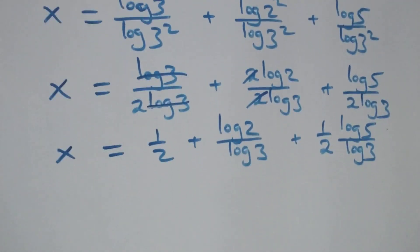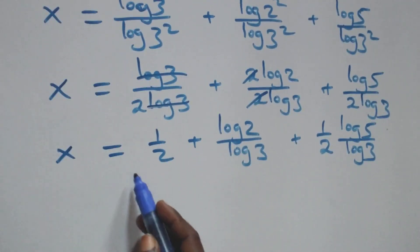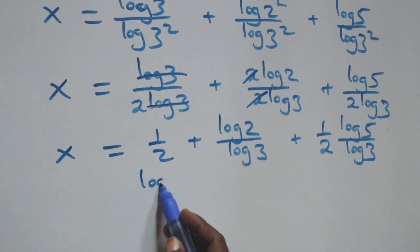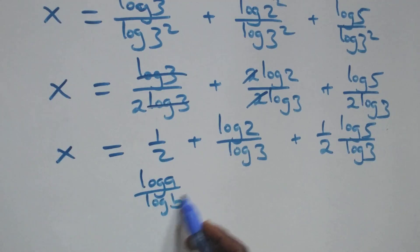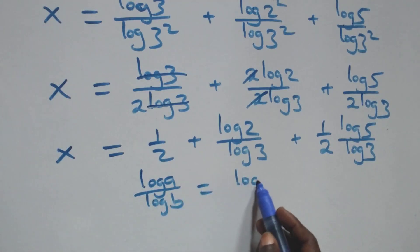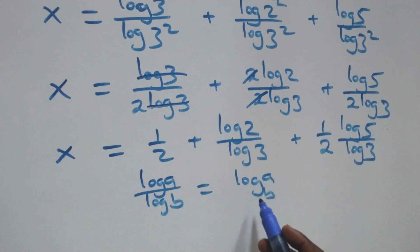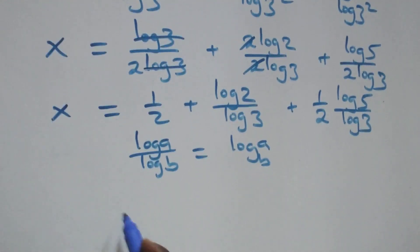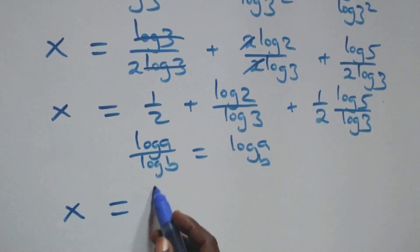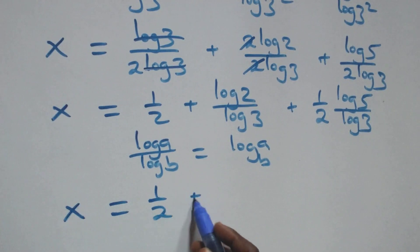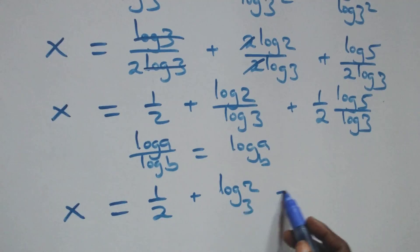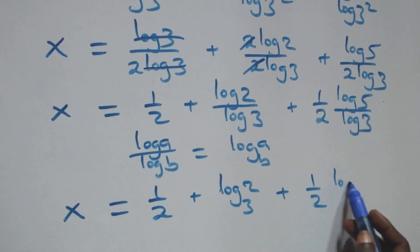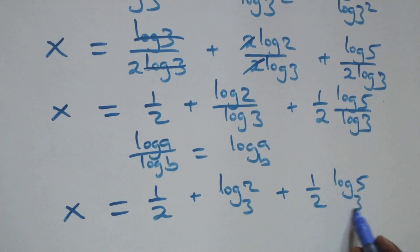From here we apply the change of base rule: log a over log b is the same thing as log a to base b. So what we have becomes x equals 1/2 plus log₃2 plus (1/2)·log₃5.